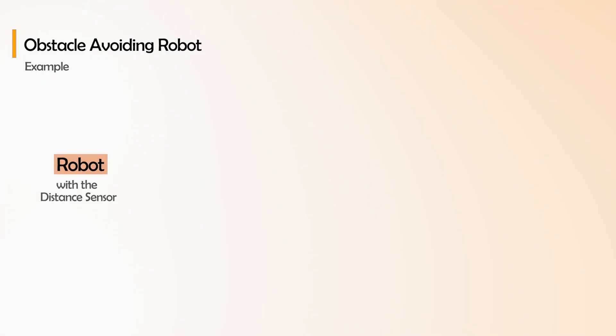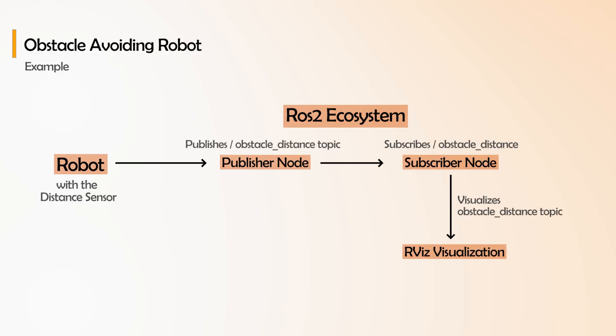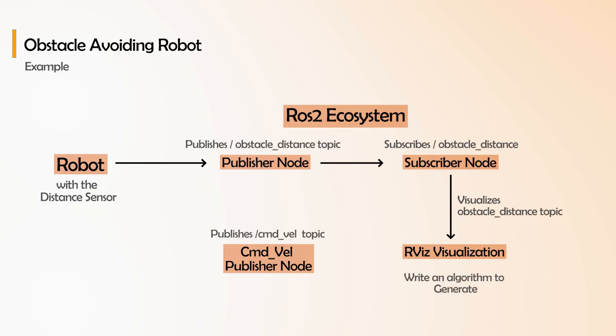The next step is to process the data in the ROS 2 ecosystem by getting sensor data from the robot and sending velocity outputs to your mobile robot. ROS 2 running on your system will do the processing. For example, for an obstacle-avoiding robot, your robot with the sensor gives you distance from an obstacle in front of it. That data comes into the ROS 2 ecosystem through nodes or a publisher, which you visualize in RViz and write an algorithm to generate velocity.